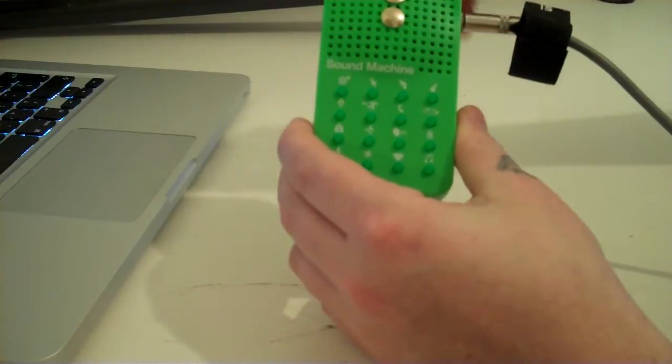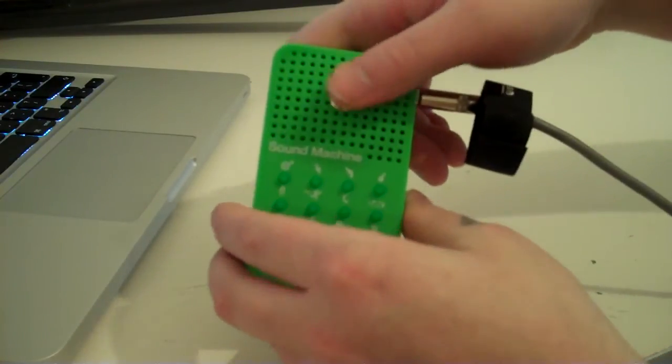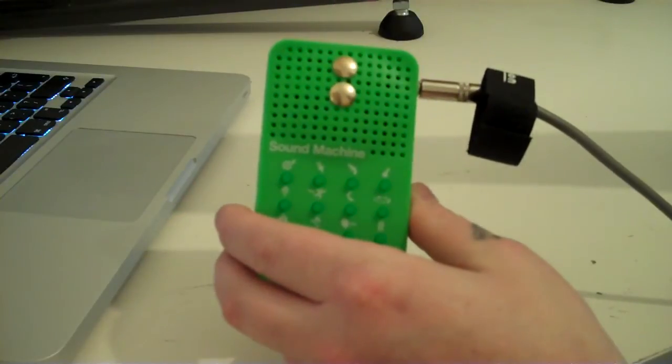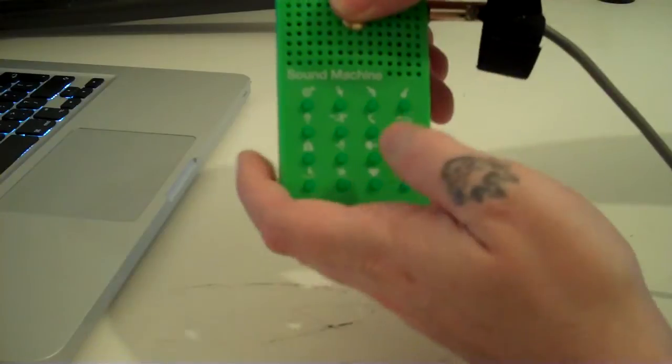And what you can do by changing how much connection you've got here, or rather changing the resistance across these two points, is you can change the speed of the playback.